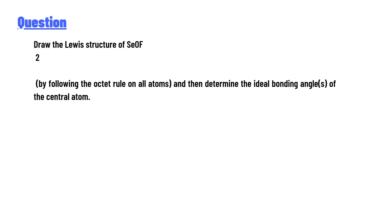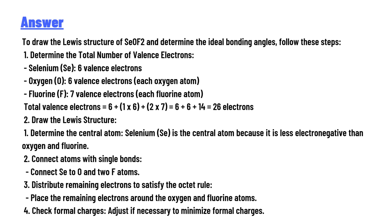By following the octet rule on all atoms and then determine the ideal bonding angles of the central atom. The answer to the question is: to draw the Lewis structure of SeOF2 and determine the ideal bonding angles, follow these steps.